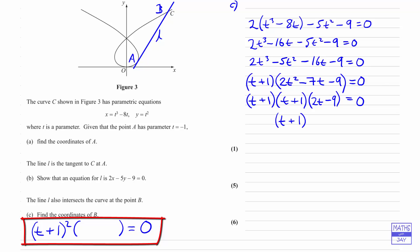So as I already mentioned, we have got this. So the T plus 1 squared is giving us the value of T for the tangent at A, and the 2T minus 9 is giving us what we want for the point at B. So at B, we know that 2T minus 9 equals 0, so T must be 9 over 2, or 4.5 if you prefer.